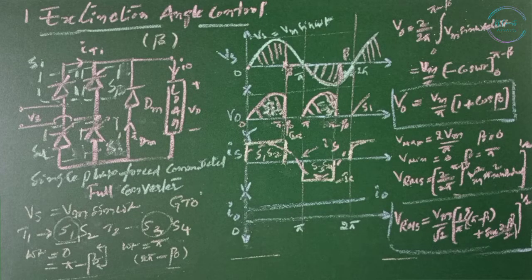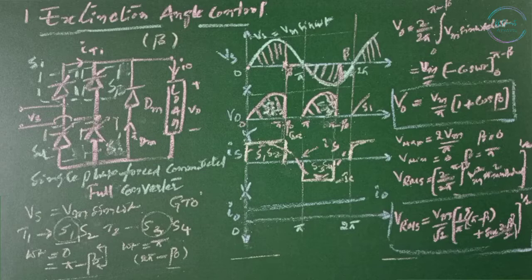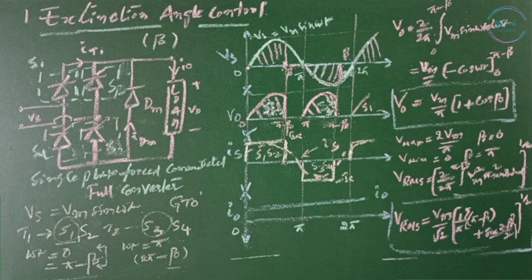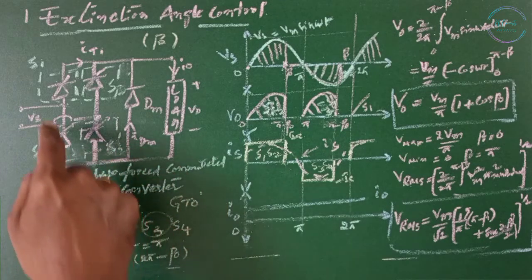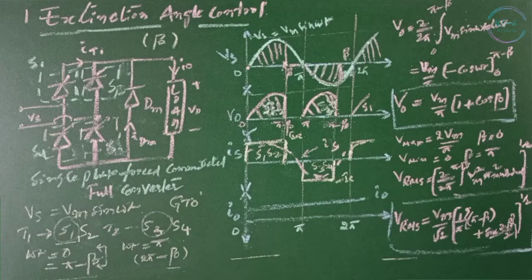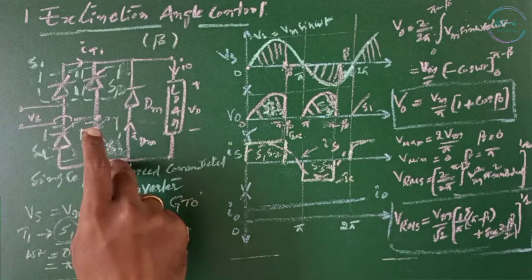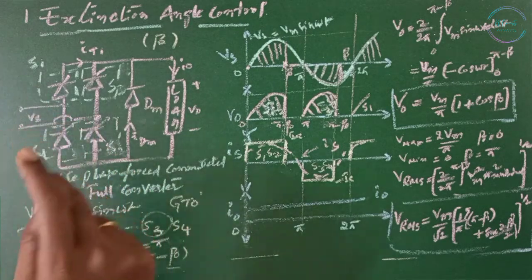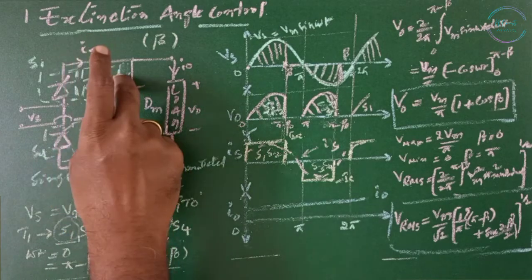If an inductive load is there, the freewheeling path for the load current must be provided by the switches of same arm. That is, the freewheeling current will flow through S1, S4 at a time, and S3, S2 at a time. The firing sequence will be S1, S2, S1, S4, S3, S2. The freewheeling action is accomplished through two switches of same arm.